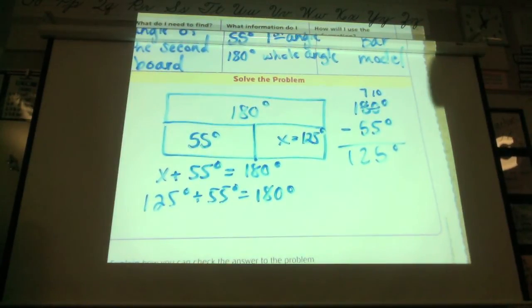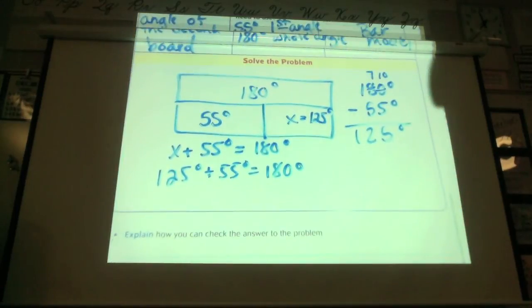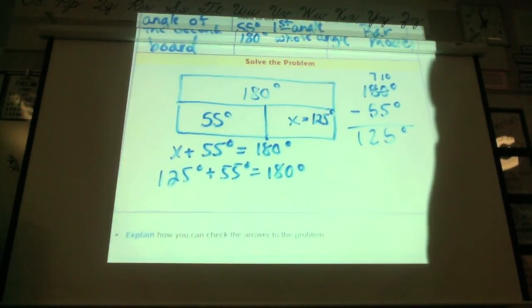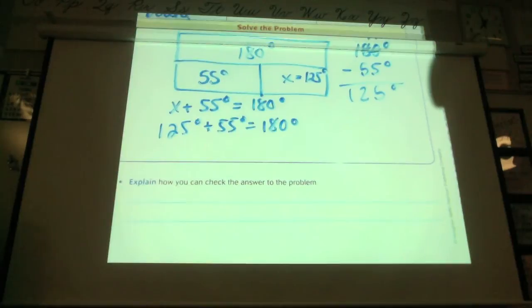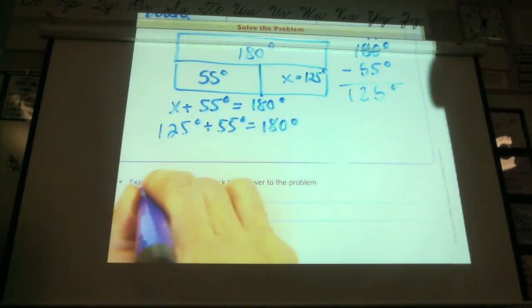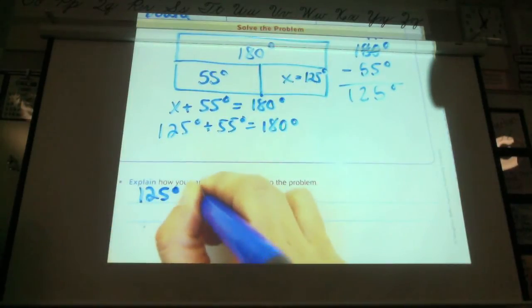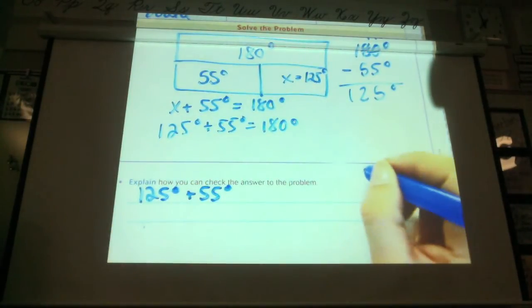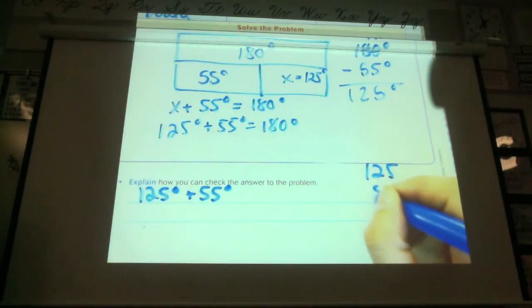How can you check your answer to this problem? How can I check? So, 125 degrees plus 55 degrees. So, I'm going to do that right here. 125. What am I hoping to get, Daniel? 180 degrees.